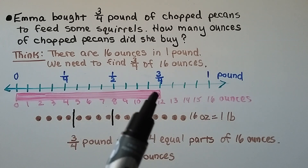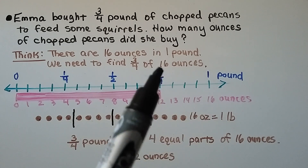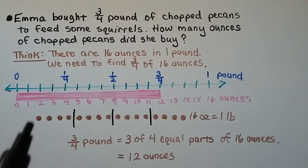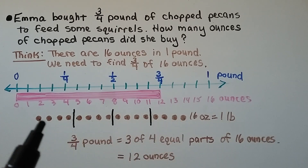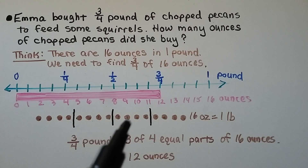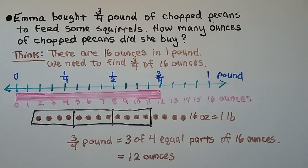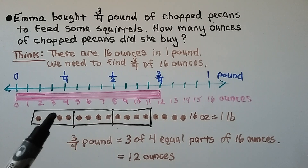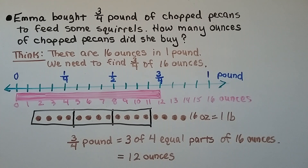We put 16 dots for 16 ounces and split them into four equal groups. We need three of the four equal parts: 4, 8, 12 — that would be 12 ounces. Three-fourths of a pound equals 3 of 4 equal parts of 16 ounces, which is 12 ounces.